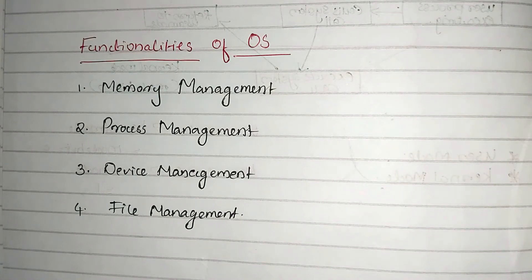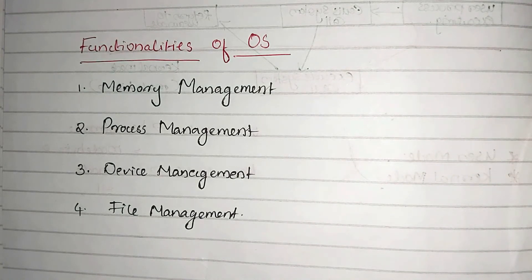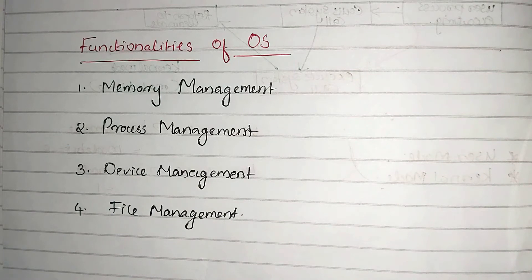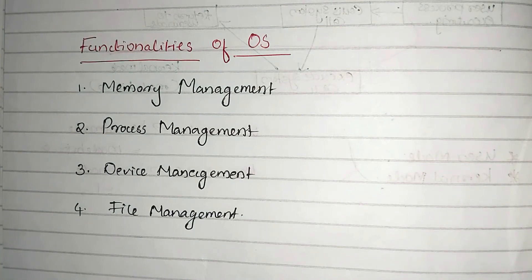For example, if a user has a Java program, the output will be printed to the monitor. To print the output, the hardware is involved. The operating system generates system calls to manage device access. I will explain the details of system calls in the next video.